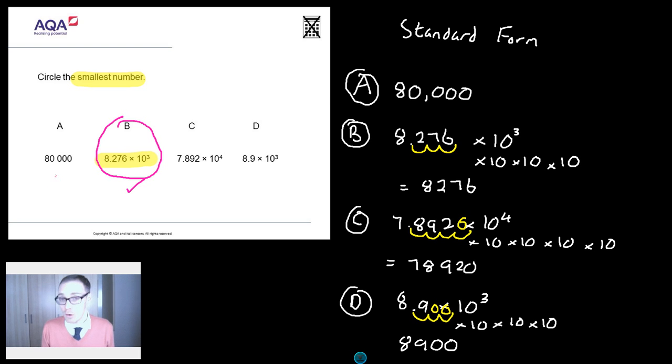Or maybe they don't fully understand standard form and they just look and see all these zeros and think, well, A is the one with the most zeros. So maybe it's the smallest number. Or it's the one that's got the fewest non-zeros, like it's got an eight and the rest is zero. So maybe it's the smallest number. Few mistakes could come in for A.